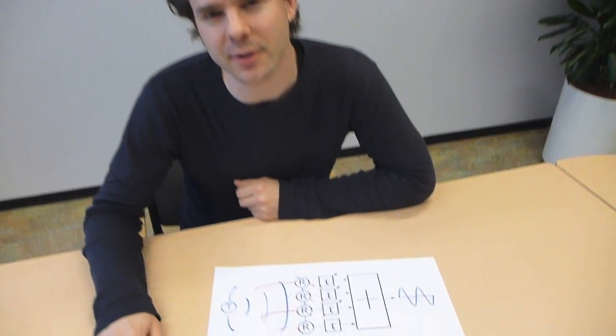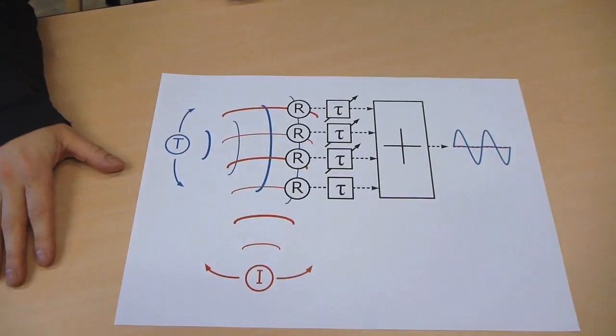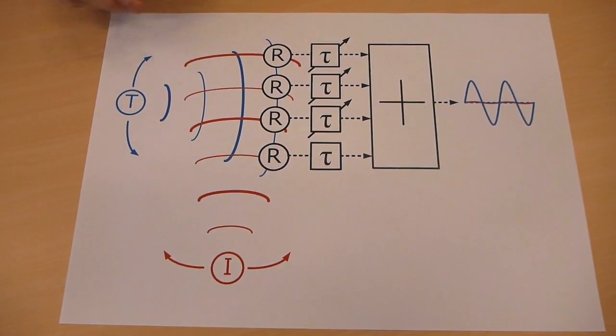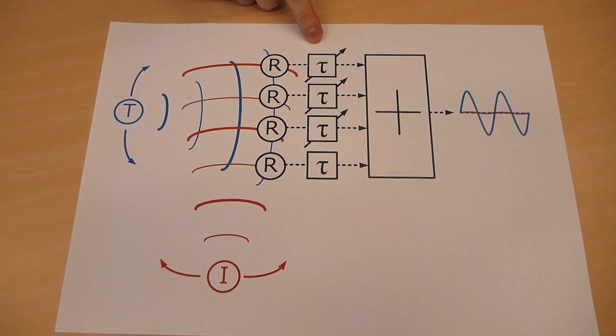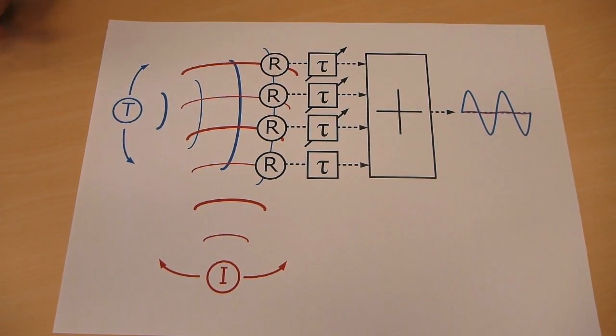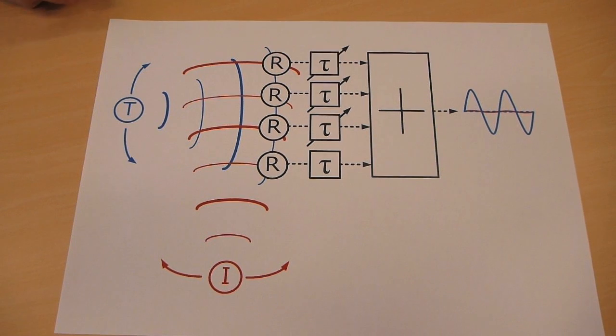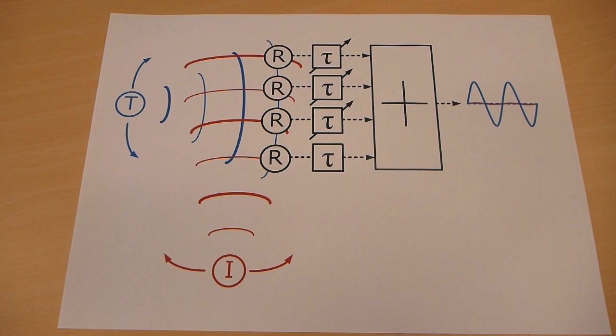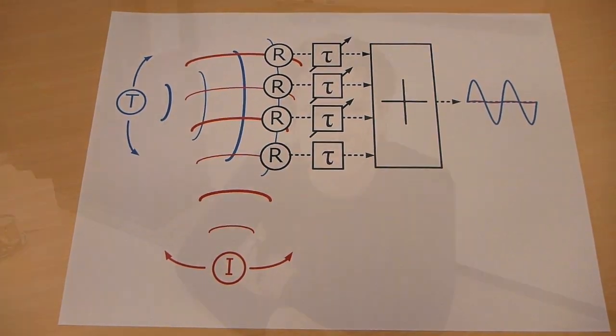However, if either the desired signal or the interferer is moving, this technique will not work and we have to insert adaptive arrays to compensate for the different arrival times of the interferer and the transmitter, so that after summation we still get a cancellation of the interferer and the maximum amplitude of the desired signal.